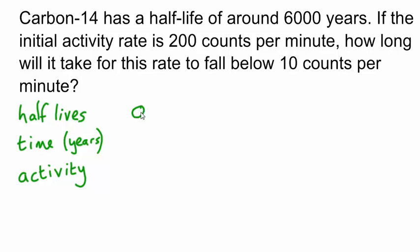We know that at our starting time, that is 0 half-lives, 0 years, we have a starting activity of 200. We don't know the final time, this is what we're finding out, so let's start by working along our activity line here. We just need to keep halving this number until we get to 10.